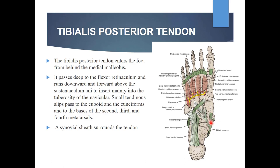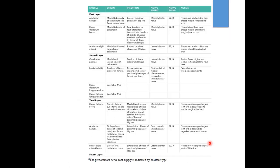The tibialis posterior tendon enters the foot from behind the medial malleolus, passes deep to the flexor retinaculum, and runs downward and forward above the sustentaculum tali to insert mainly into the tuberosity of the navicular bone. Small tendinous slips pass to the cuboid, the cuneiforms, and the bases of the second, third, and fourth metatarsal bones. A synovial sheath surrounds the tendon.